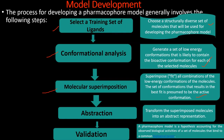The next step is abstraction: after molecular superimposition, transfer the superimposed molecules into an abstract representation. After that, we validate the model. The pharmacophore model is a hypothesis accounting for the observed biological activities of a set of molecules that bind to a common biological target. A molecule drawn in 2D exists in a particular conformational form, and that conformational form determines how active it will be — these are the steps involved in developing the model.